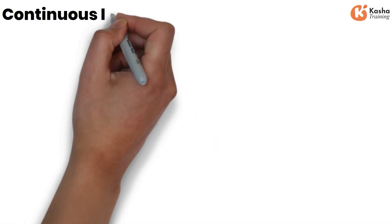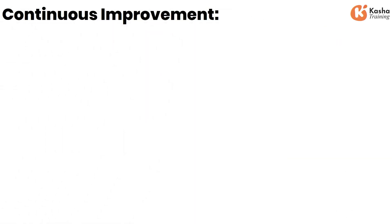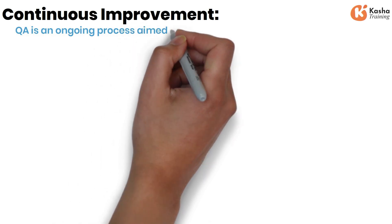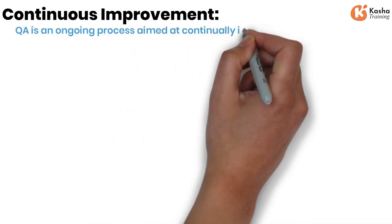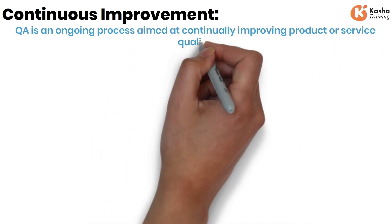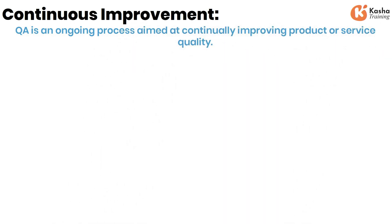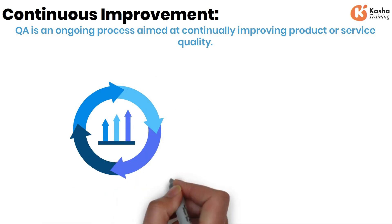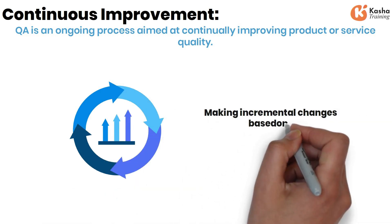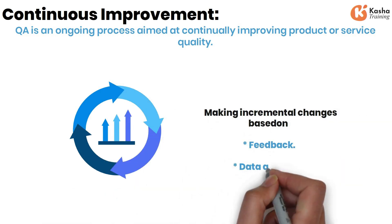Continuous Improvement. QA is an ongoing process aimed at continually improving product or service quality. This can involve making incremental changes based on feedback and data analysis.